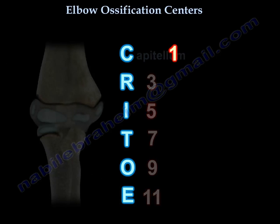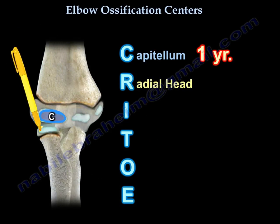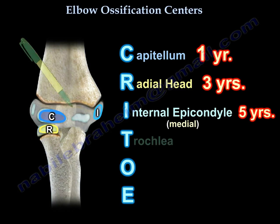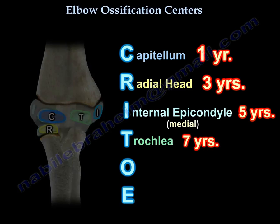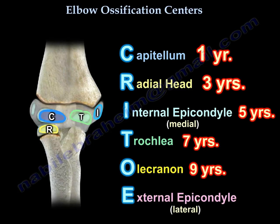CRITOE stands for: C — capitellum, R — radial head, I — internal or medial epicondyle, T — trochlea, O — olecranon, E — external or lateral epicondyle.